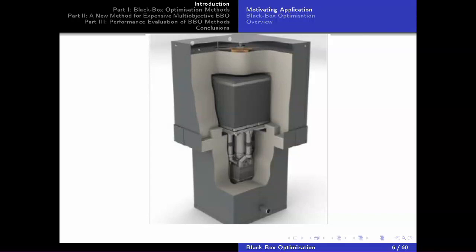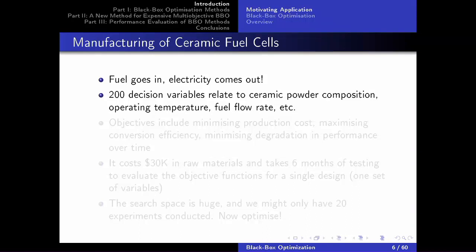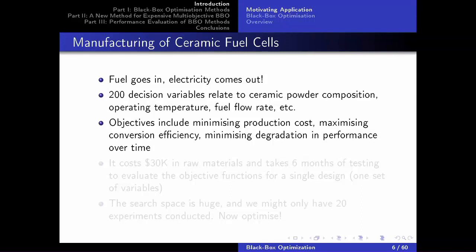The problem is the company can't produce these machines with all the desirable properties they want. They don't understand the connection between the 200 different decision variables — ceramic powder composition, operating temperature, fuel flow rate, and many more — and the success of the product. It's a risky business model, but potentially a game changer.